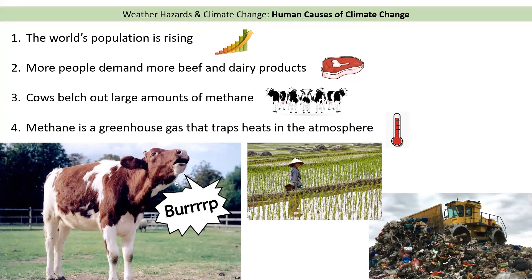If there are more cows on the planet because more people want to eat beef, they're burping out lots and lots of methane. Other things that produce methane include growing rice, which produces quite a lot of methane, and landfills — when we throw things away and don't recycle them, they end up on a landfill pile, and as that decomposes or rots it releases lots of methane as well. But the main contributor to methane is rearing cows, so that's farming.